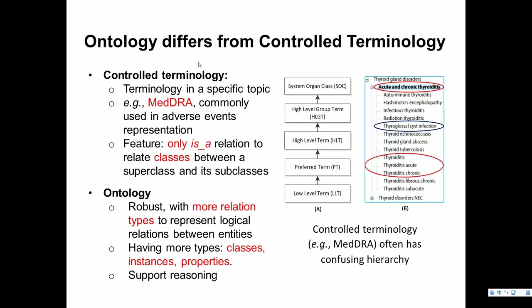Ontology differs from controlled terminology. For example, MedDRA is a traditional controlled terminology used for adverse event representation. Compared to ontology, controlled terminology basically only has an is-a relation, so everything at the bottom has a parent term. It is relatively loose. Ontology is the modern-day, new generation approach — it has more relation types, class instances, properties, and can support reasoning.